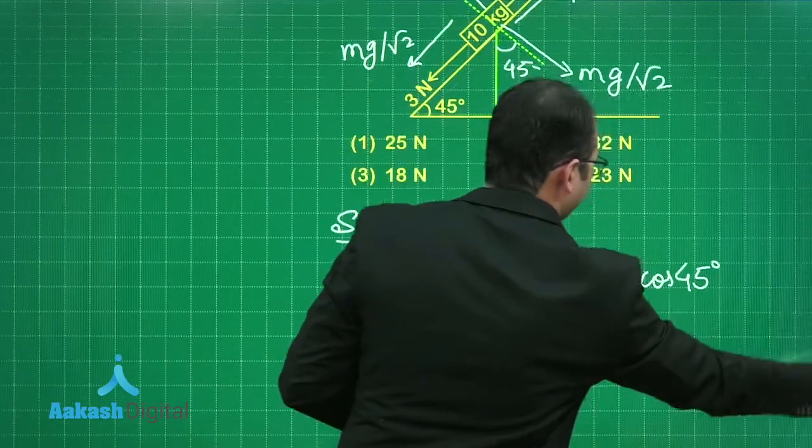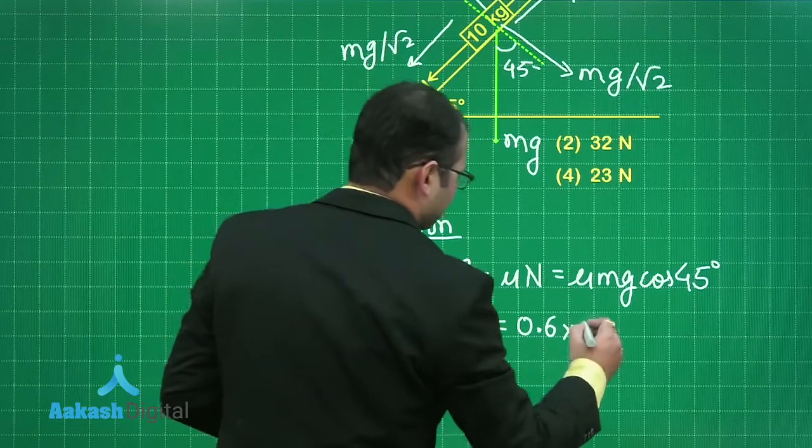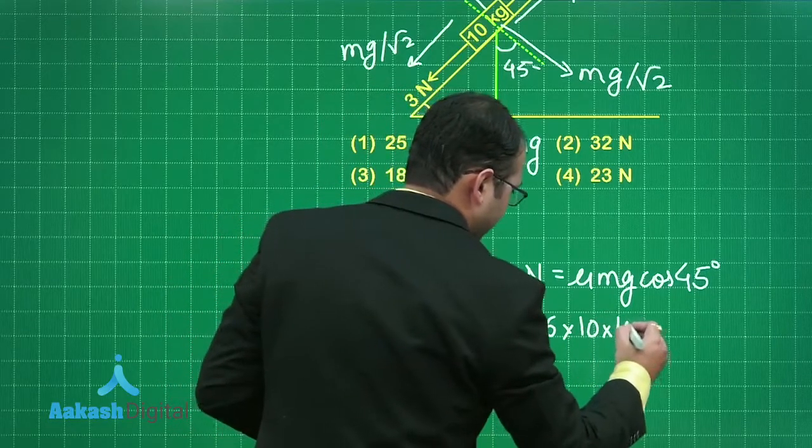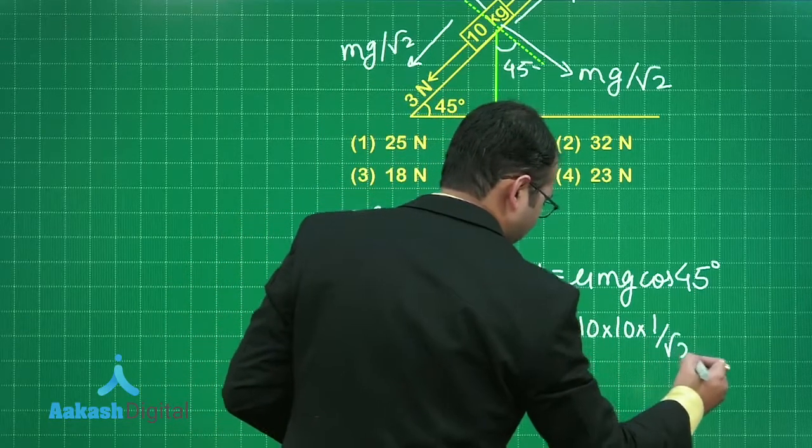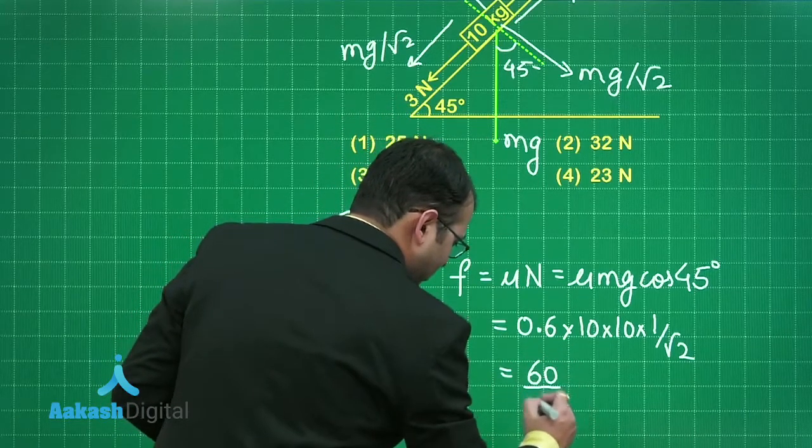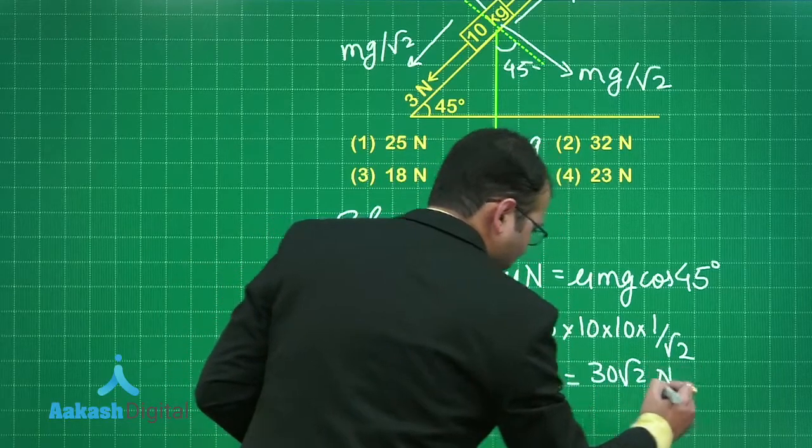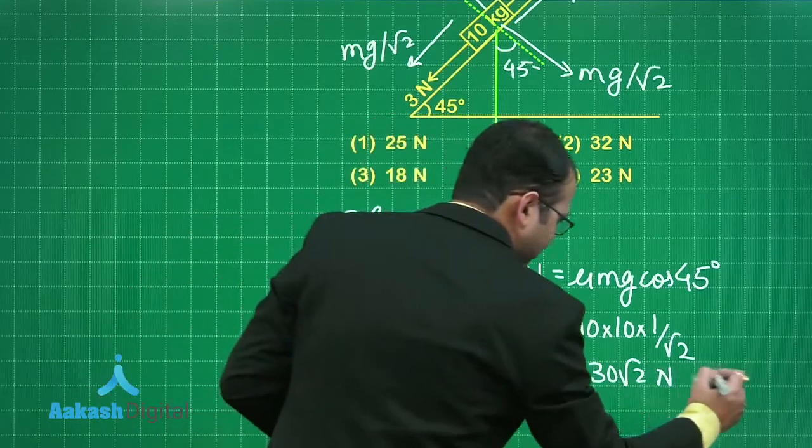From here you will get 0.6 the mass of block is 10 into 10 into 1 by root 2, so it would be 60 by root 2 or 30 root 2 Newton. We have force of friction with us this is the first case.